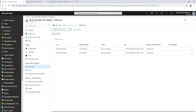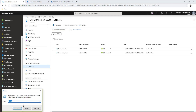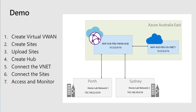Now let's do some quick connectivity testing. I'll log into the Perth VM and test branch-to-branch connectivity - checking connectivity to the Sydney branch, which goes through the Microsoft V-WAN hub and back out to Sydney. The traffic will originate from IP 22.22.2 and the destination is 24.2.